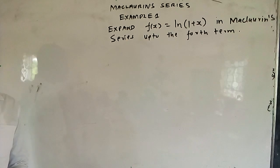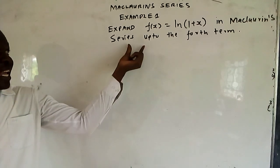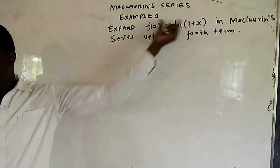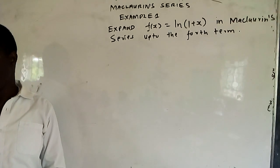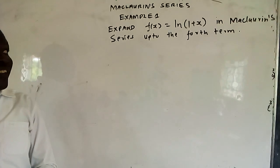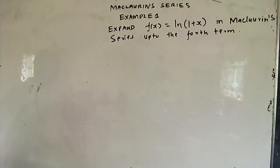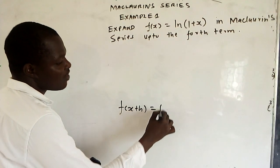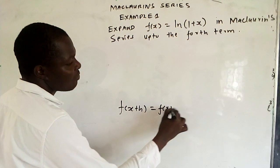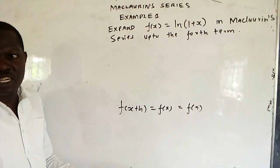The first thing you need to do is to write down the Maclaurin series. To get the Maclaurin series, you start from the Taylor series. Remember, we say a function f(x) is equal to f(a) — this is what is guiding you.